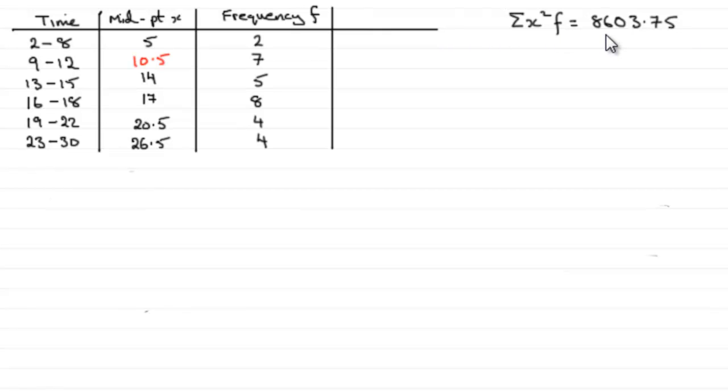So how do we first of all calculate the mean? Well, the mean μ, let's just write this in here, is equal to Sigma, the sum of x times f, all divided by Sigma f—a formula that we should be familiar with.